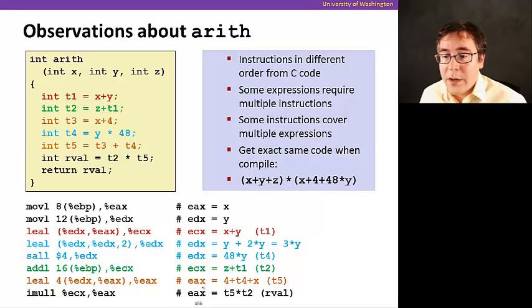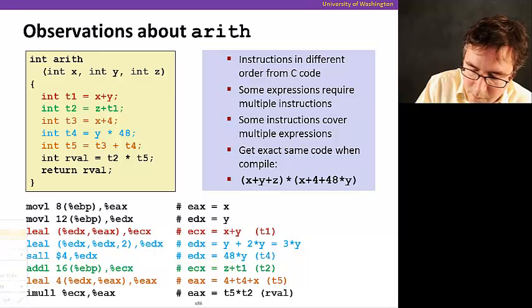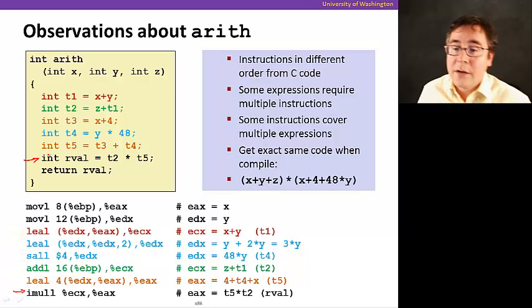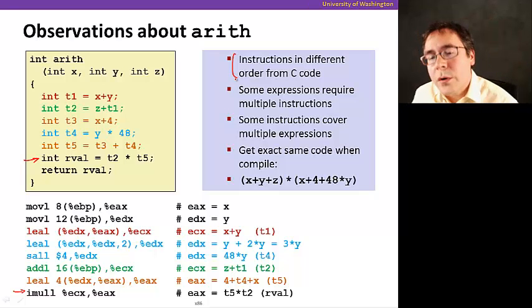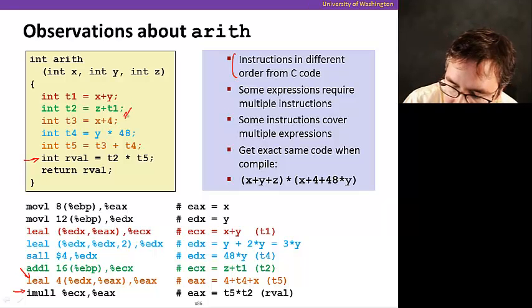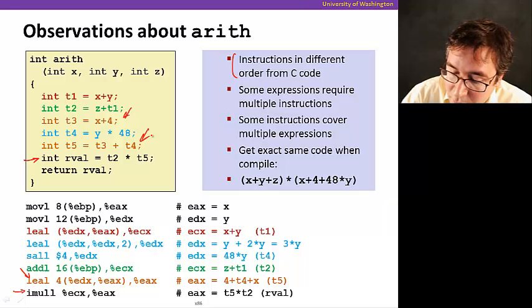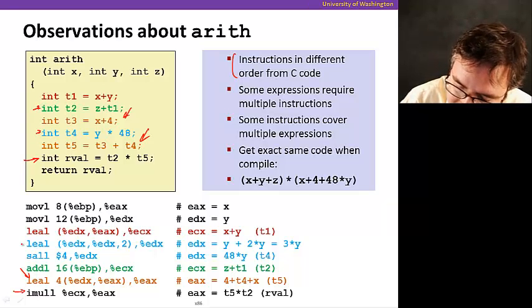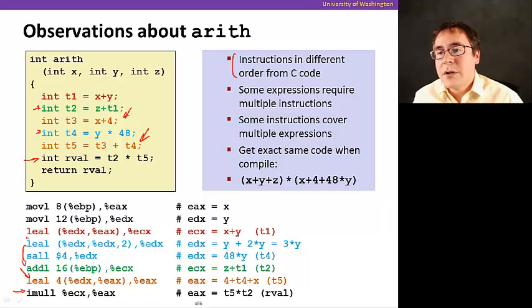And then finally, we are, in this instruction here. This instruction is just implementing the final step in our function. So things to note here is that the instructions are in a different order than what appeared in the C code. So you see like this orange instruction happens to implement and relates to these two instructions in C code. These two statements in the C code. And also, green comes before blue in C. But blue comes before green in the assembly code.